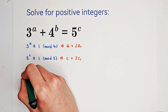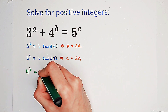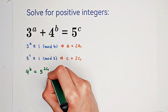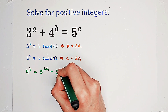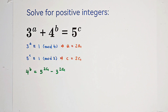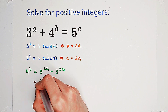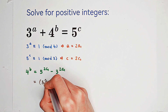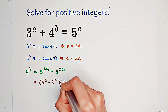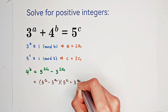We can write this equation as 4 to the power of b equals 5 to the power of 2c1 minus 3 to the power of 2a1. This factors as 5 to the power of c1 minus 3 to the power of a1, times 5 to the power of c1 plus 3 to the power of a1.